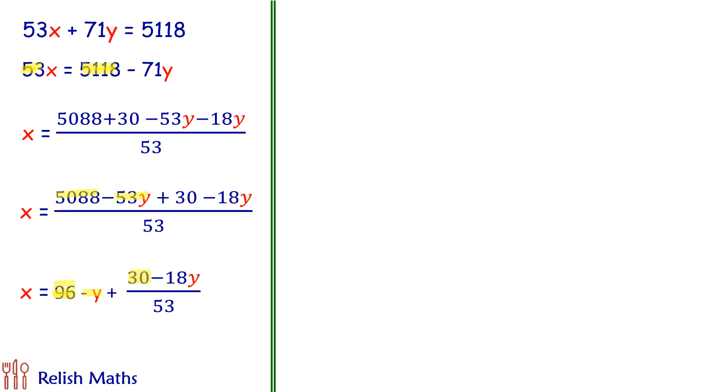Now, here if you will see we have got x which is a natural number or we can say integer. 96 is an integer, negative y, y is also an integer which is number of pens. So this particular term has to be integer, because integer is sum or difference of integers here. So there is no other option but this particular expression should be an integer. Let's assume this expression is equal to z.